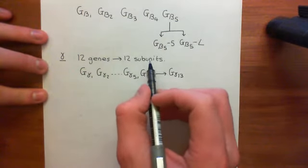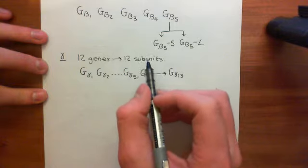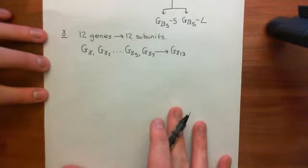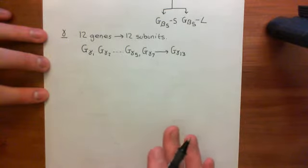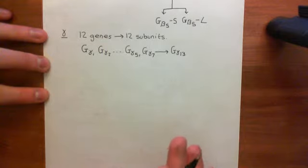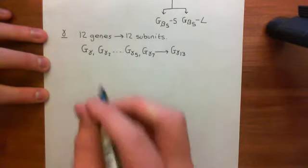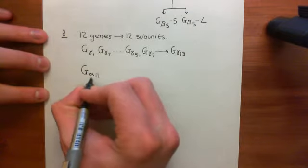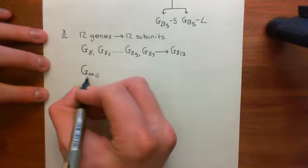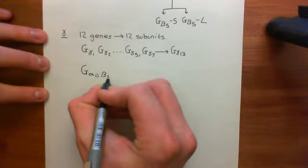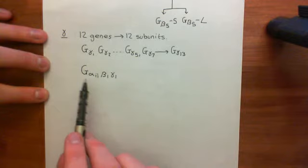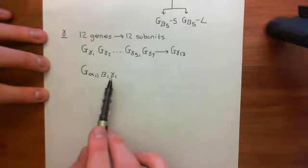We now have a vast plethora of different alpha, beta, and gamma subunits to build heterotrimeric G proteins. In the ideal world, when naming heterotrimeric G proteins, people would tell you exactly which alpha subunit, which beta subunit, and which gamma subunit they have. For example, you would say G-alpha-I1, beta-1, gamma-1 — this labels a heterotrimeric G protein and tells us exactly which alpha, beta, and gamma subunit it contains.